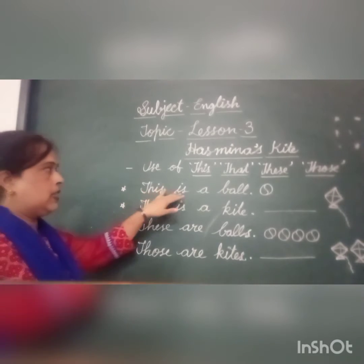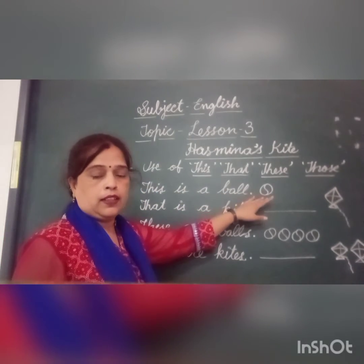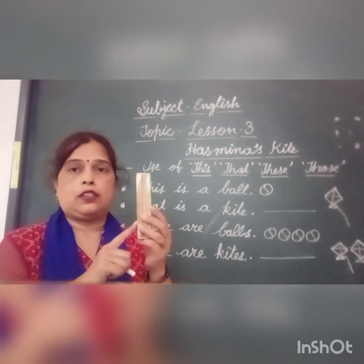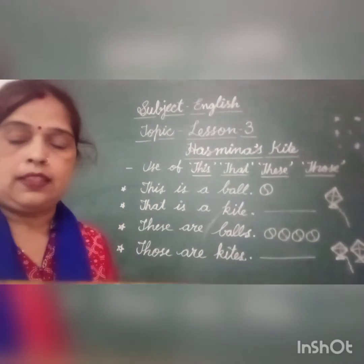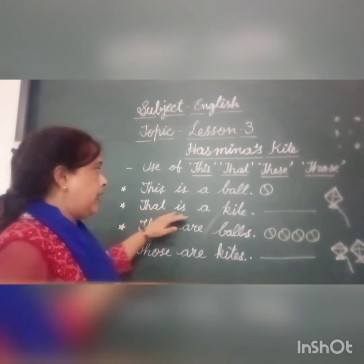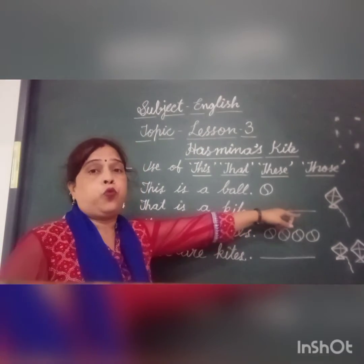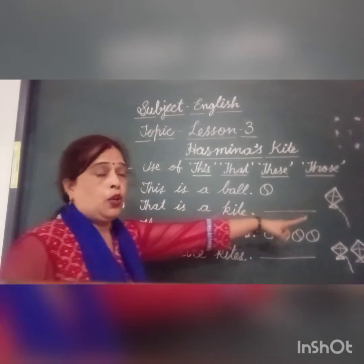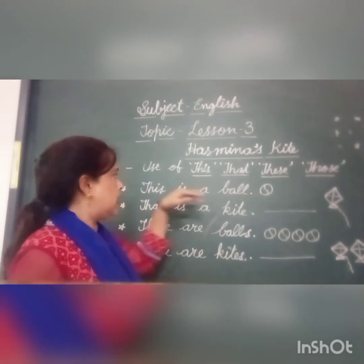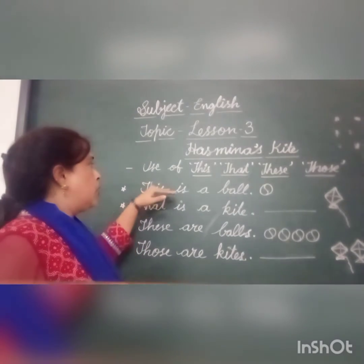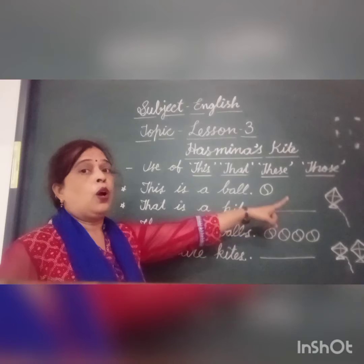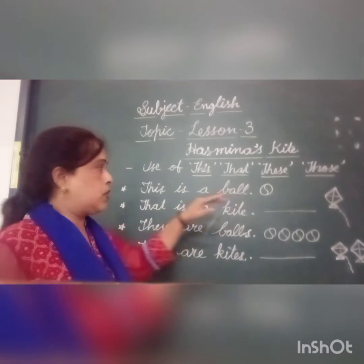For example: this is a wall — wall is near. Or we can say, this is a chalk, this is a duster. But that is a blackboard, or that is a kite — kite is far. So if the object is near and singular, we use 'this'. And if the object is far, we use 'that'.